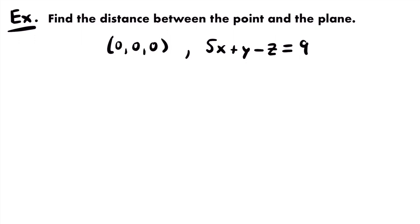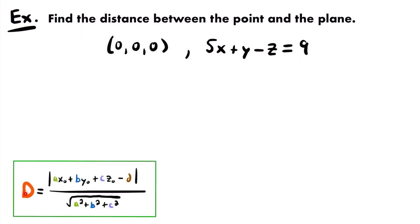It looks like this. The distance is equal to the absolute value of a·x₀ + b·y₀ + c·z₀ - d, divided by the square root of a² + b² + c².